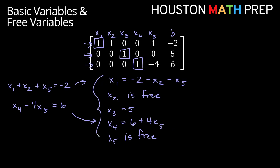You can see that x2 and x5 are allowed to be any real number. x3 is always going to be 5, no matter what. x4 will vary depending on what we choose for x5. And x1 is determined by both what we choose for x2 and x5. Thanks for watching, everyone. Hopefully this helps you determine what's basic, what's free in terms of variables, and how to write those solutions for your systems of equations.